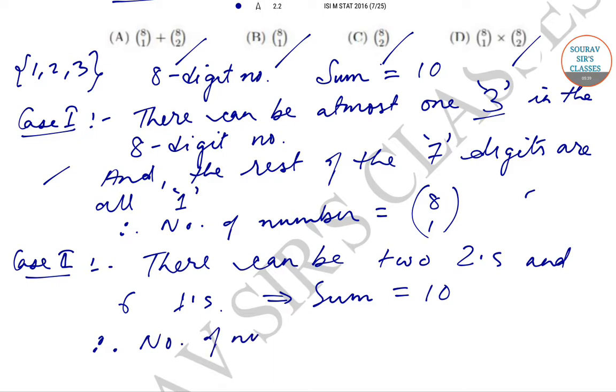And the total number of numbers that can be formed in this case is given by 8C2. Therefore, if we combine case 1 and case 2, total numbers will be equal to 8C1 plus 8C2, which is option A.